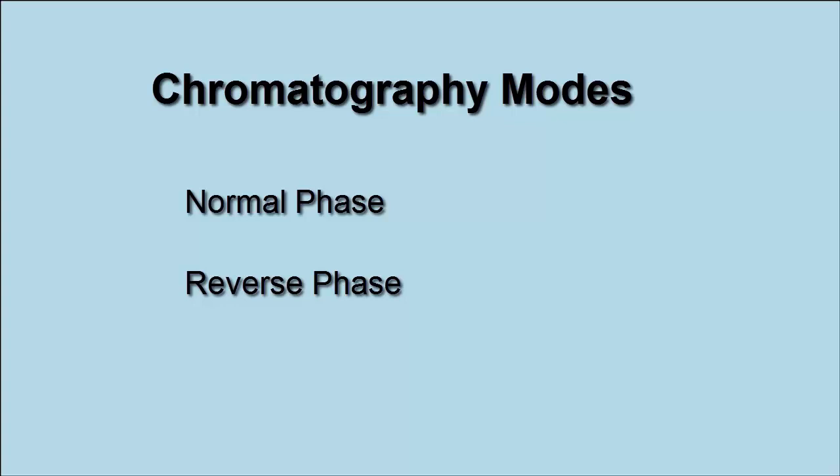Reverse phase chromatography involves using a stationary phase that is nonpolar and a mobile phase that is polar, typically something like water or alcohols. Now, the choice of whether you're going to use reverse phase chromatography or normal phase chromatography largely depends upon what you're trying to separate. But more often than not, you'll find that the mode of chromatography will be determined by experimentation.